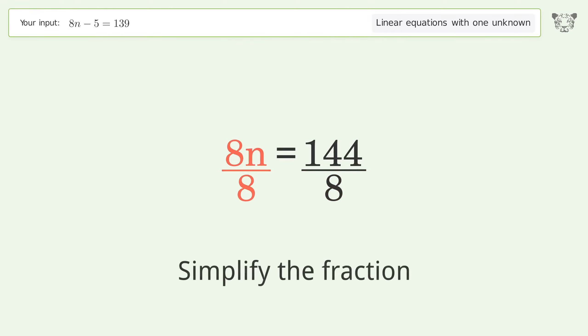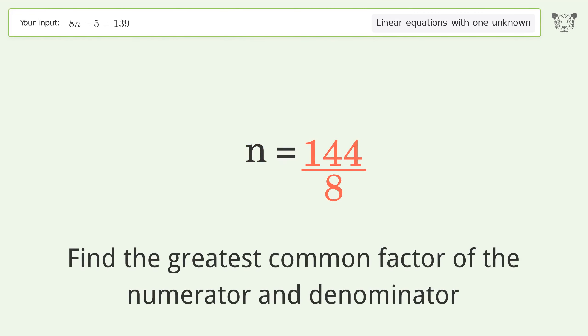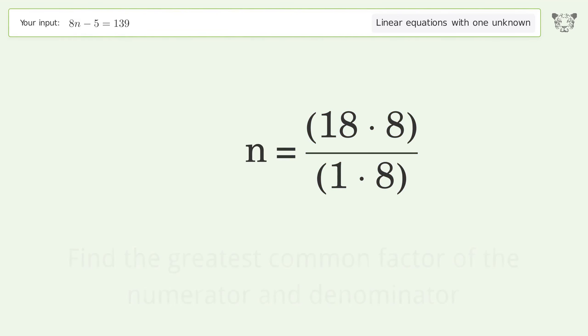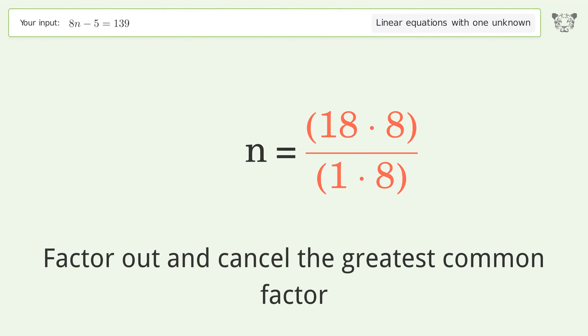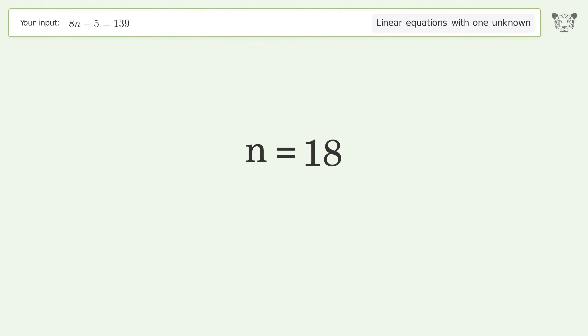Simplify the fraction. Find the greatest common factor of the numerator and denominator. Factor out and cancel the greatest common factor. And so the final result is n equals 18.